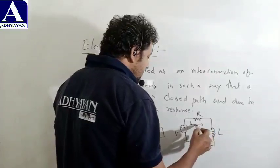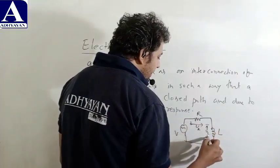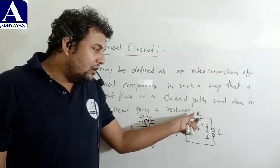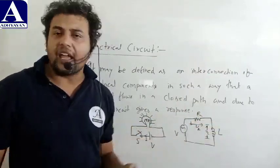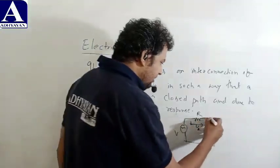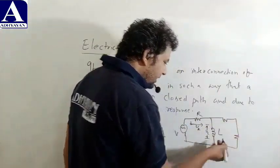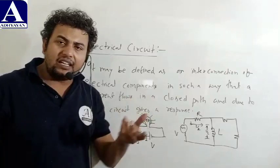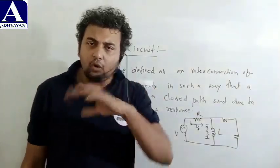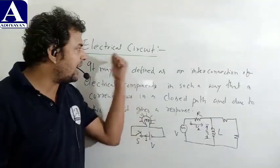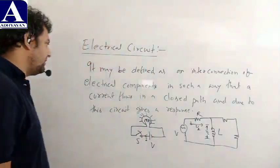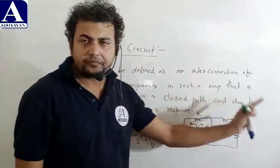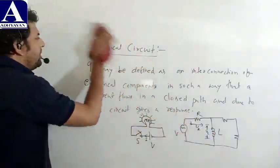तो ऐसा electrical components का connection जिससे की एक closed path बने और कुछ response दे वो circuit, उसको हम लोग electrical circuit बोलेंगे। This is your electrical circuit - बहुत ही छोटा सा यह topic था, इसमें कुछ खास नहीं है। इसके बाद का जो second topic है that is electric field - what do you mean by electric field।